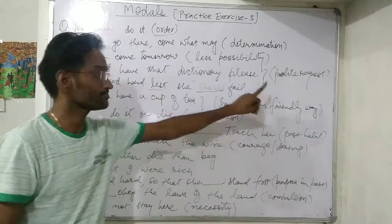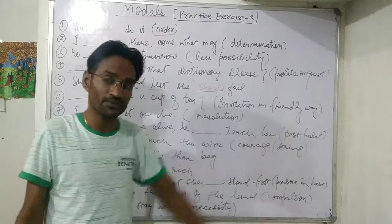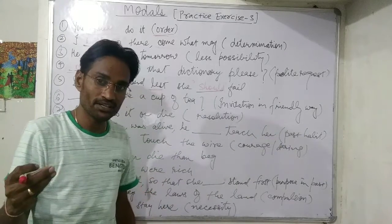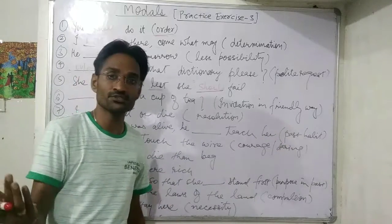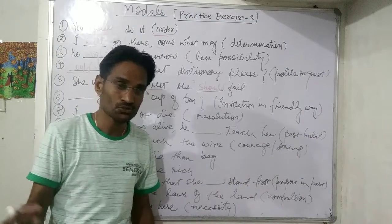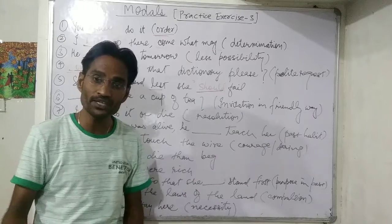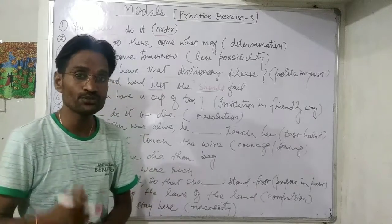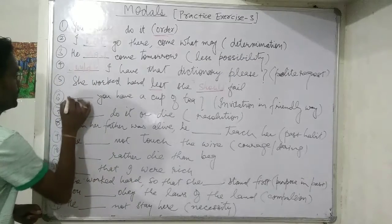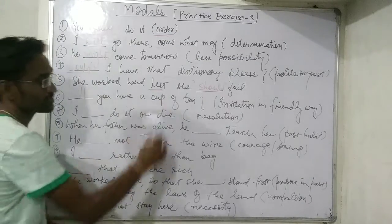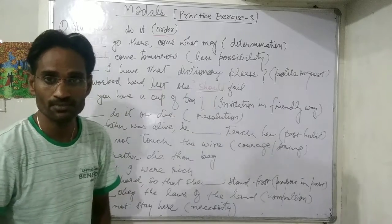Next: 'You have a cup of tea' — invitation in a friendly way. You are inviting somebody in a very friendly way, maybe a friend. Whenever you are inviting somebody in a friendly way, you use 'will.' So: 'Will you have a cup of tea?' — it means let's share a cup of tea.